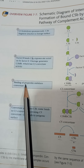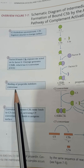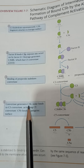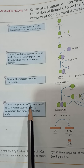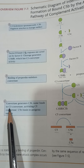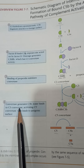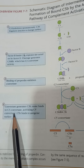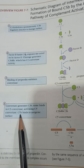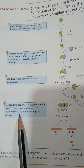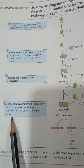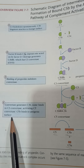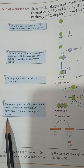Binding of properdin stabilizes C3 convertase. C3 convertase then cleaves C3 and generates the larger fragment C3b. Some C3b molecules bind back to the same C3 convertase, activating C5 convertase. C5 convertase cleaves C5 to produce C5b, the larger component. C5b binds to the antigenic surface and further joins with C6, C7, C8, and C9 to produce the membrane attack complex.